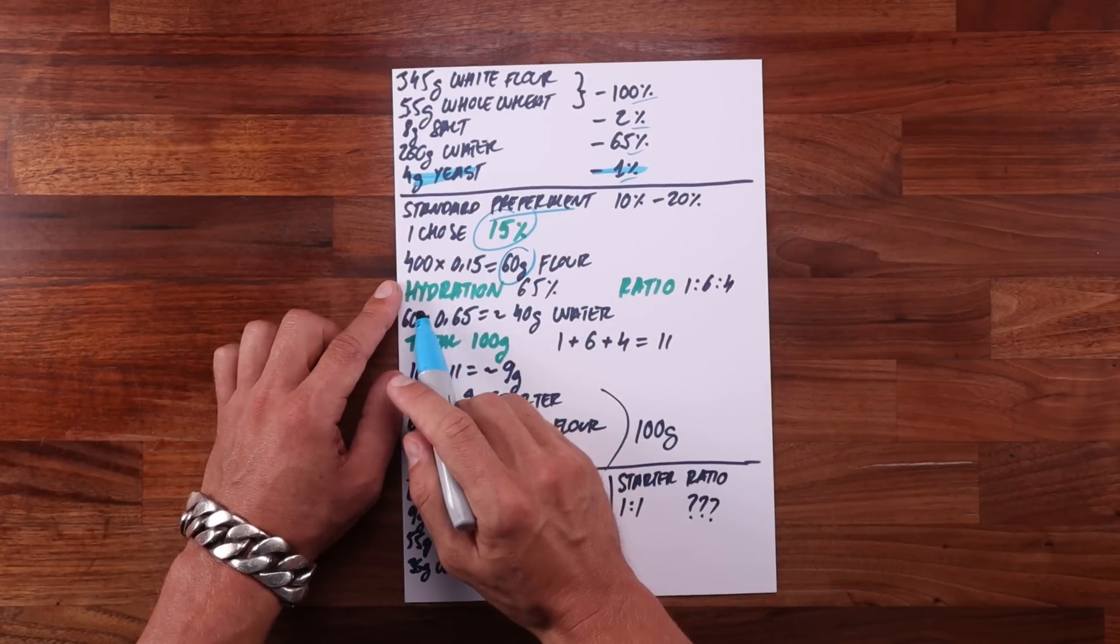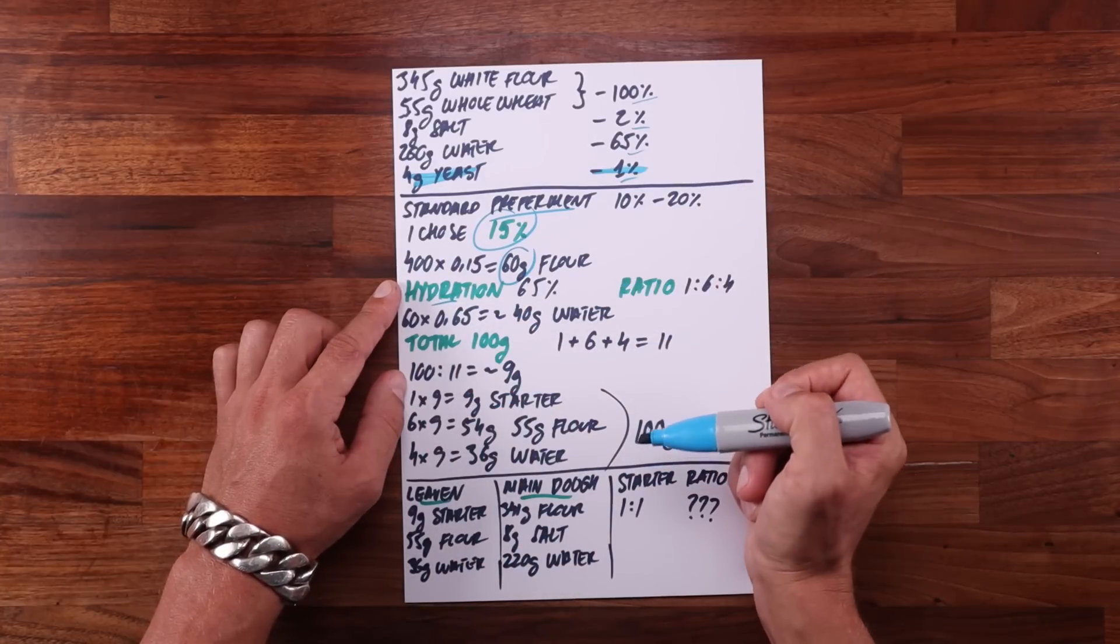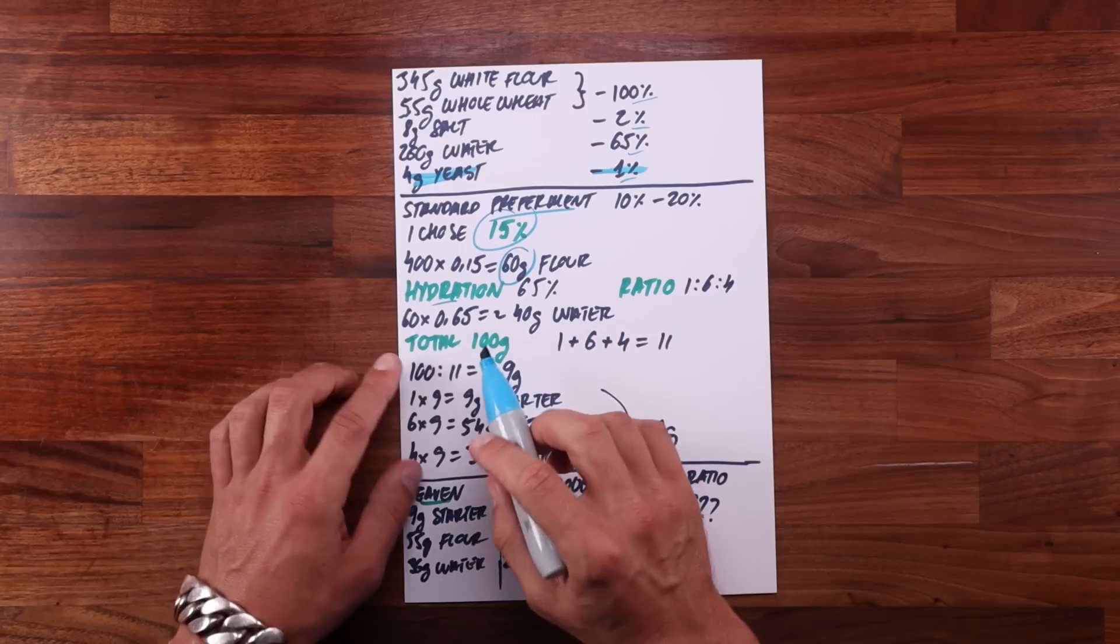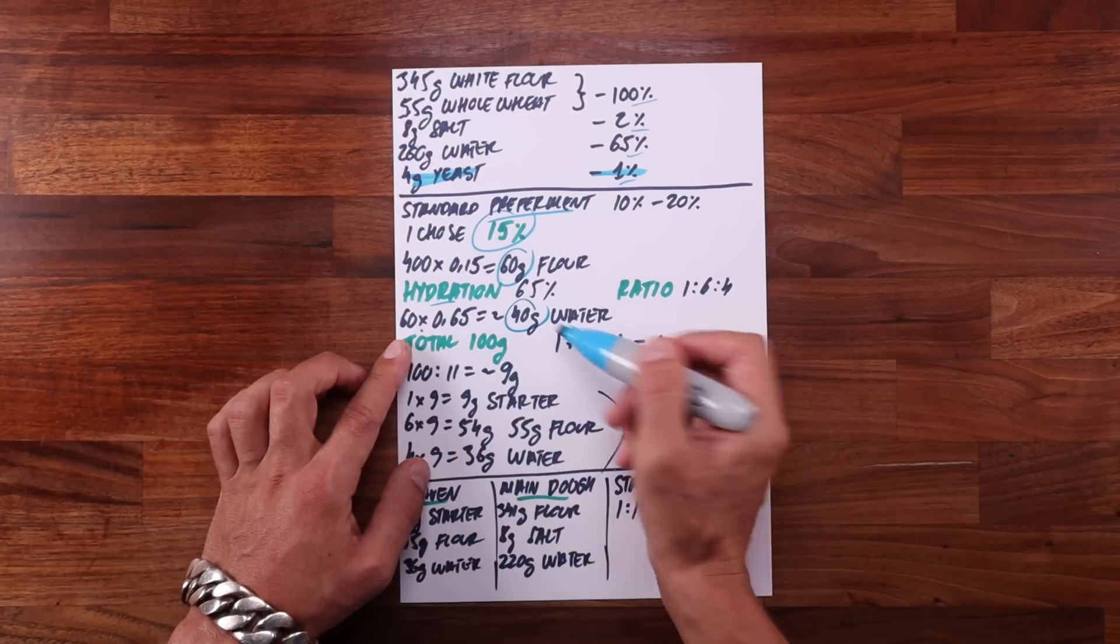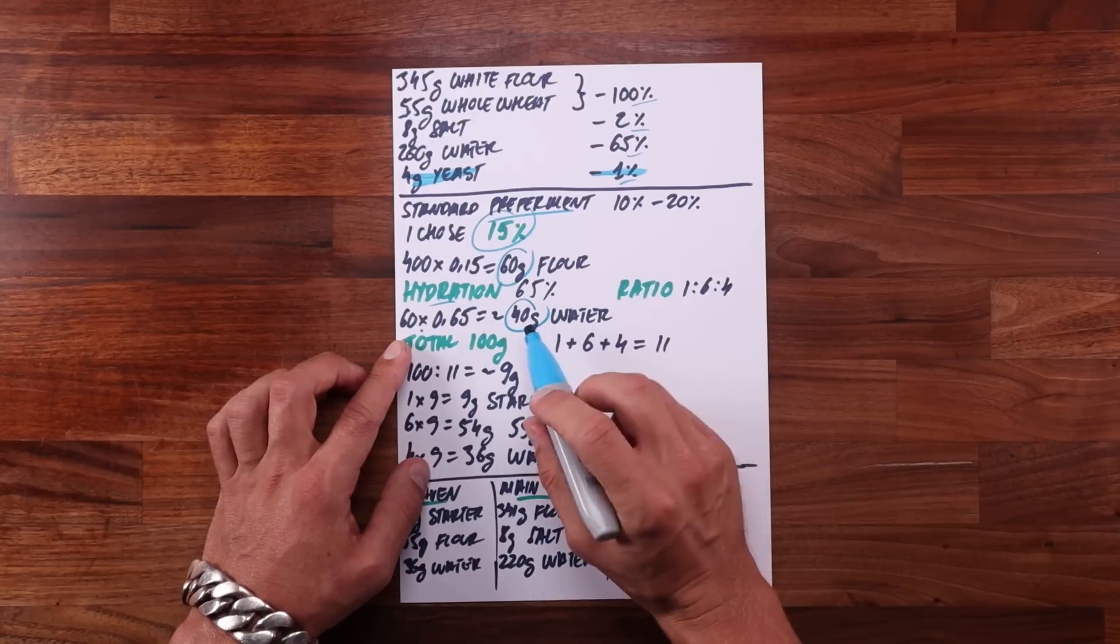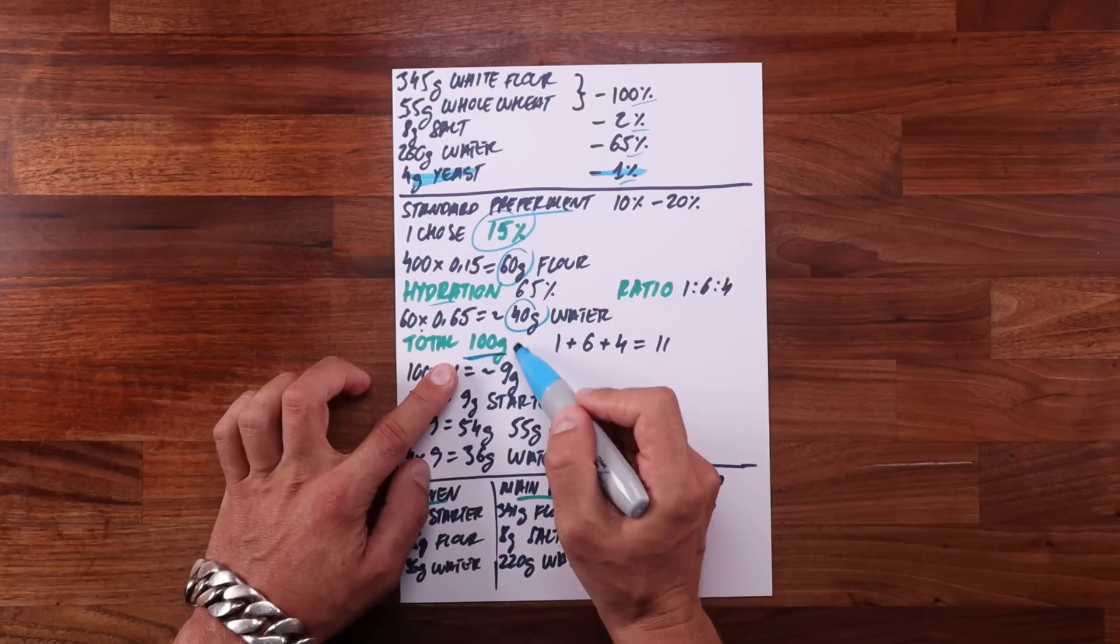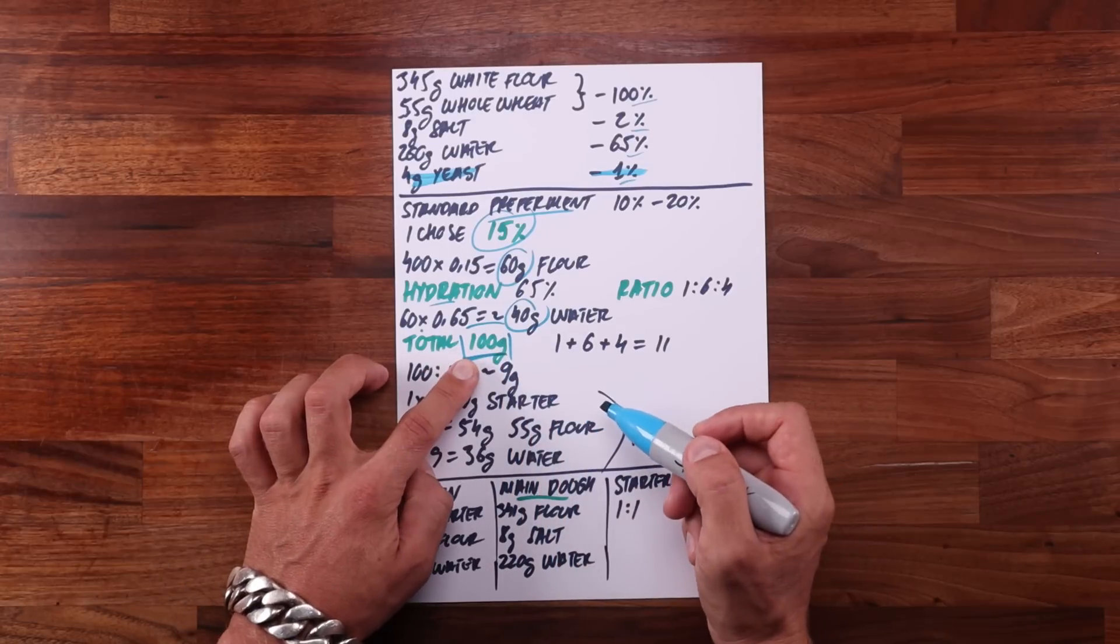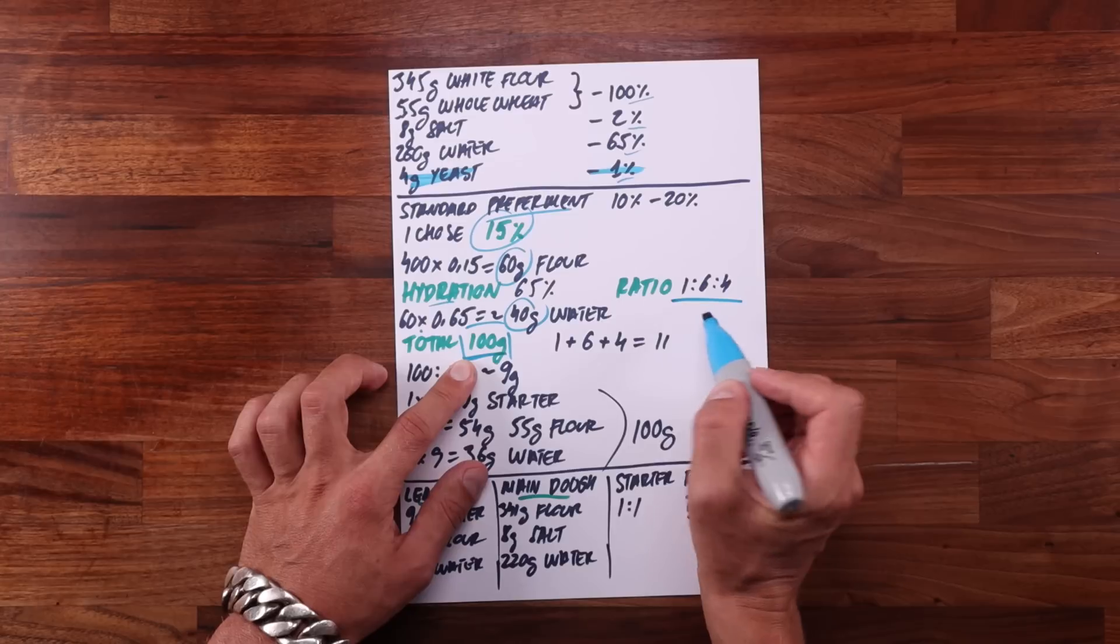Now we need to figure out how much water there is in the preferment. I decided to keep it at 65% to match the dough. So using baker's math we take the total amount of flour in the preferment times it by 0.65 which gives us about 40 grams of water. It's okay to round these numbers up or down. So adding up the flour and water gives us 100 grams. That is the total weight of the preferment. But as I mentioned earlier preferment is made up of three parts: starter, flour and water.